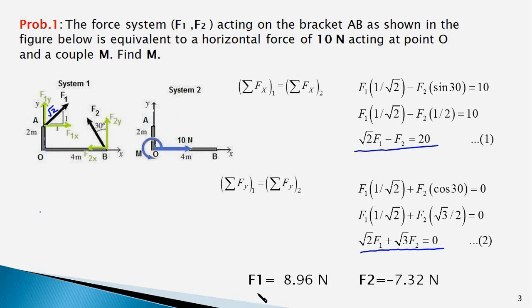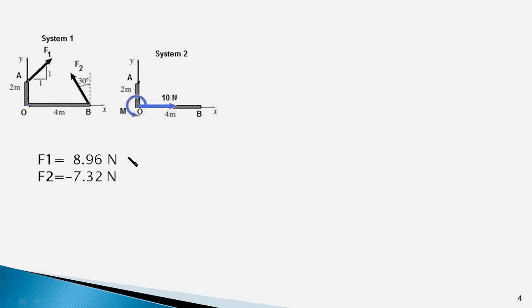Now having got the magnitude of these two forces we can compute the value of the moment about point O. Here are the results that we got from the previous slide and now we shall use the second condition which is the sum of moments of all the forces about point O in system 1 would be equal to the sum of moments in system 2, that is the moment of the couple M in this particular case.